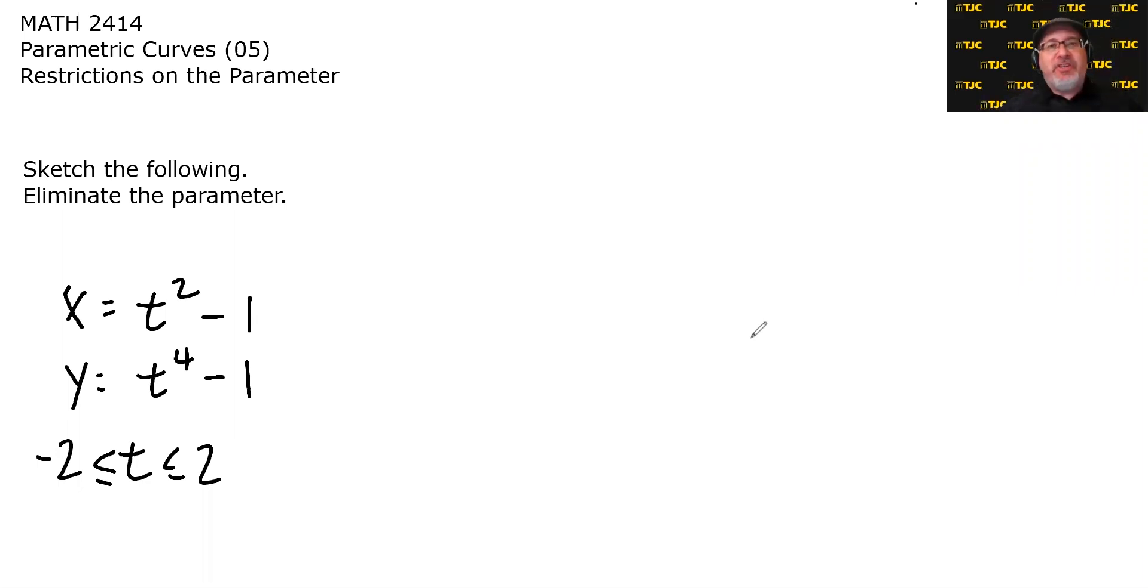In some parametric equations, the t is allowed to be anything within the domain of the functions, but sometimes the t is artificially restricted or whatever the parameter is. In this case, we have x equals t squared minus 1, y equals t to the fourth minus 1, but our t is restricted to being between negative 2 and 2.